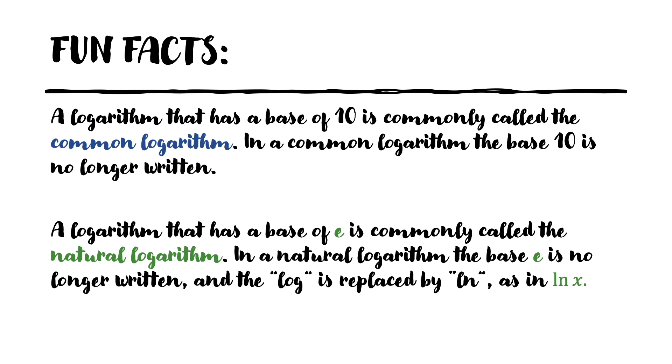A logarithm that has a base of e is commonly called the natural logarithm. In a natural logarithm, the base e is no longer written and log is replaced by ln, as in ln of x.